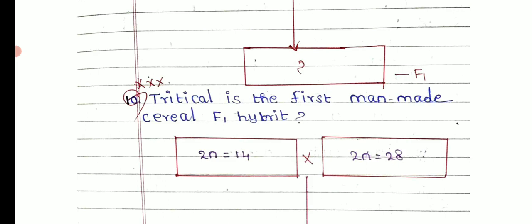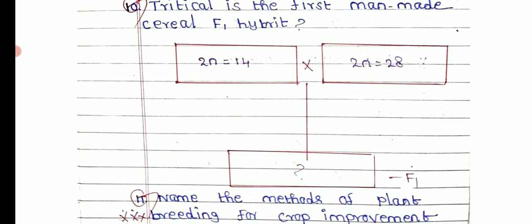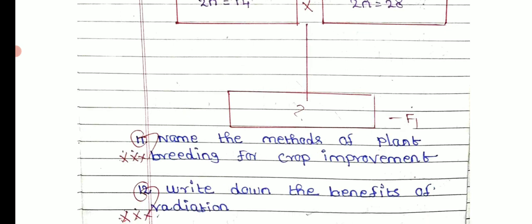Triticale is the first man-made cereal — an F1 hybrid with 2N equal to 14 and 2N equal to 28, in the F1 generation. Name the methods of plant breeding for crop improvement.